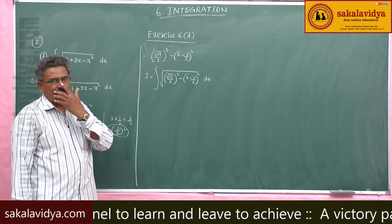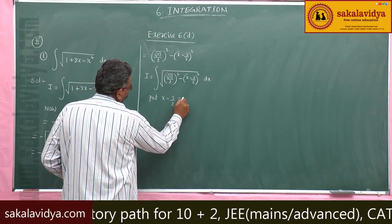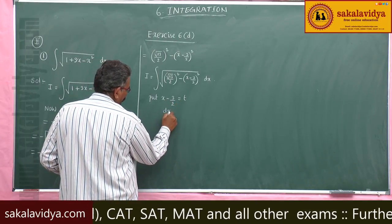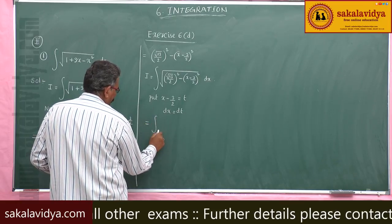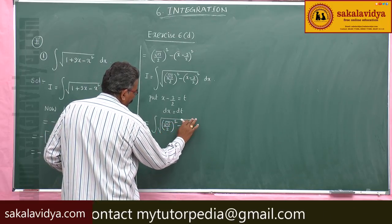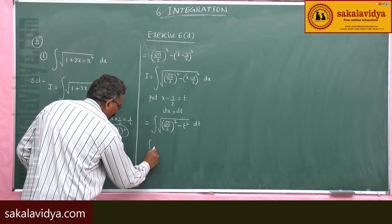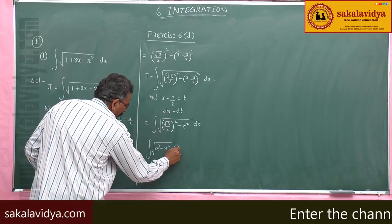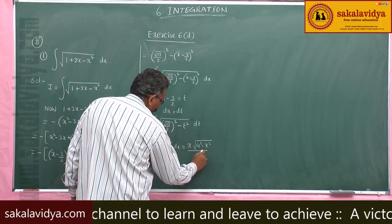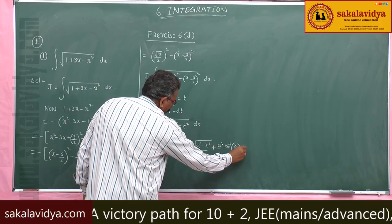After that, substitution: put x - 3/2 = t, differentiate so dx = dt. This gives integral of √[(√13/2)² - t²] dt. This is in the form ∫√(a² - x²) dx = x√(a²-x²)/2 + (a²/2)sin⁻¹(x/a) + C.